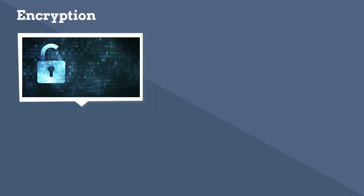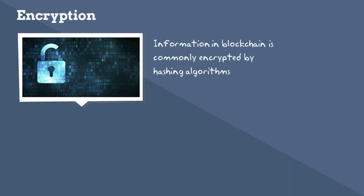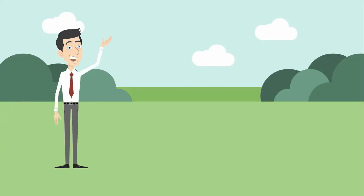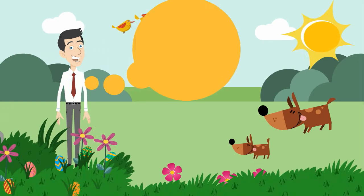Information in the blockchain is commonly encrypted by hashing algorithms. A private key, or a string of random-looking digits, allows users to access their own assets. A public key allows users to make transactions.